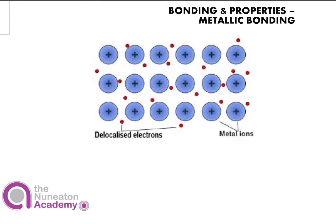Ionic bonding is when you have a metal and a non-metal transferring electrons between different atoms to produce ions that then bond due to their opposite charges being attracted together by electrostatic forces.